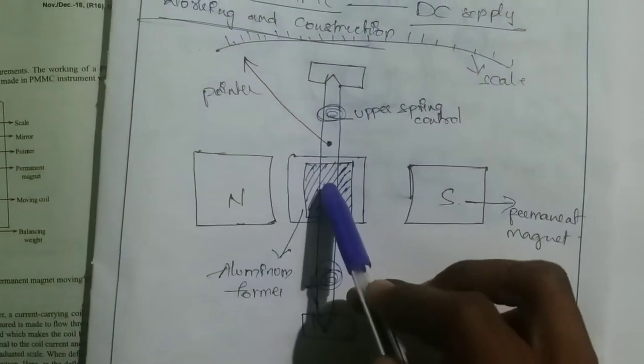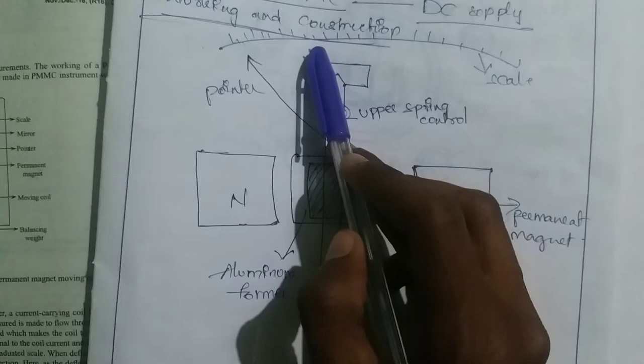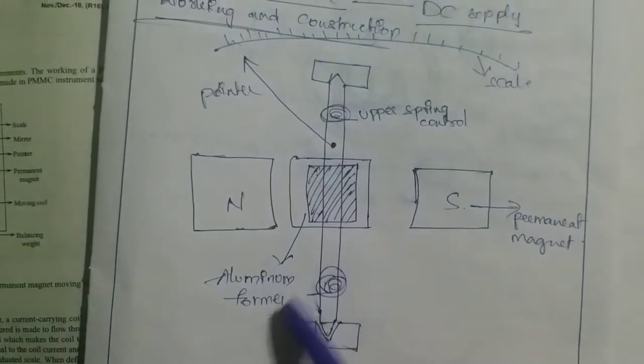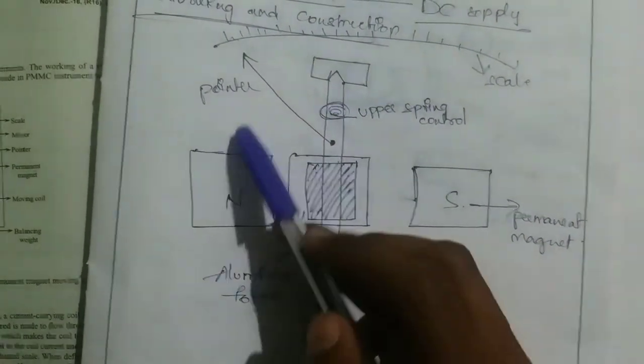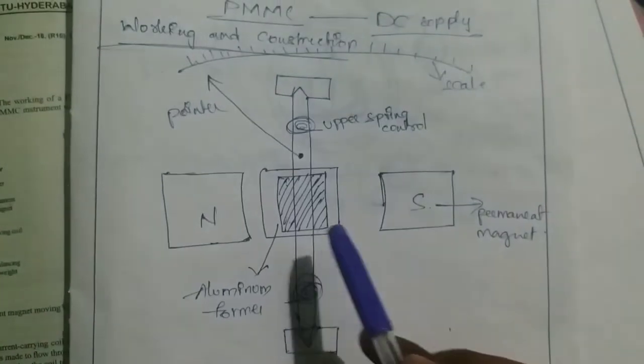The pointer will be shown here. The current flow is equal to the deflection torque.